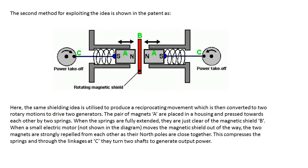The second method for exploiting the idea is shown in the patent. Here, the same shielding idea is utilized to produce a reciprocating movement which is then converted to two rotary motions to drive two generators. The pair of magnets A are placed in a housing and pressed towards each other by two springs.